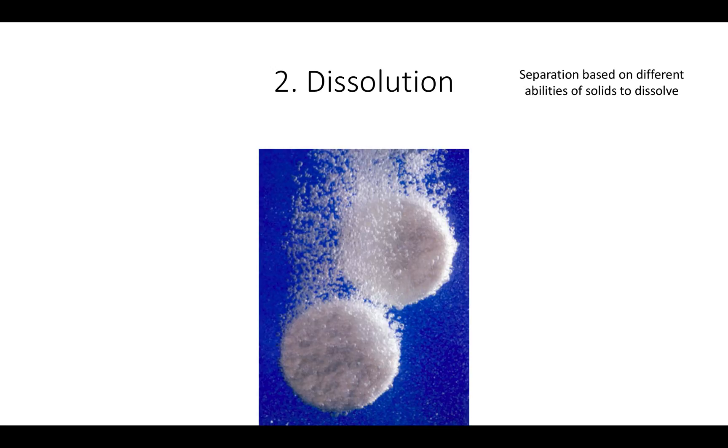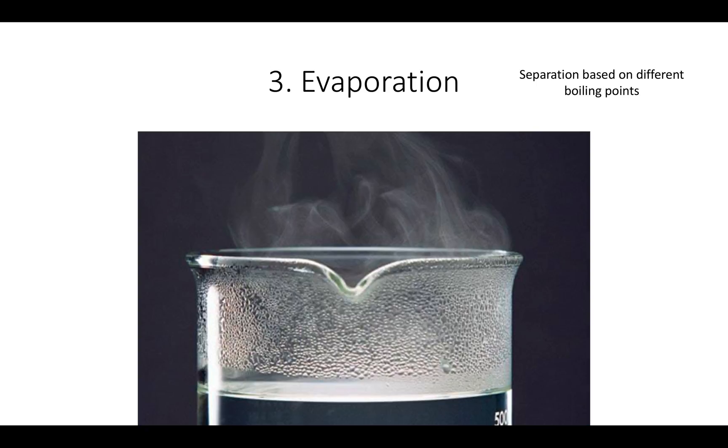Dissolution lets you separate solids based on their ability to dissolve in a liquid. If one solid dissolves and another doesn't, then you can separate them by putting them into the liquid. Evaporation separates things based on the temperature at which they boil. So if one liquid boils at 50 degrees and another liquid boils at 100 degrees, you can heat the mixture up to 75. One will boil away and the other will stay as a liquid in the container.